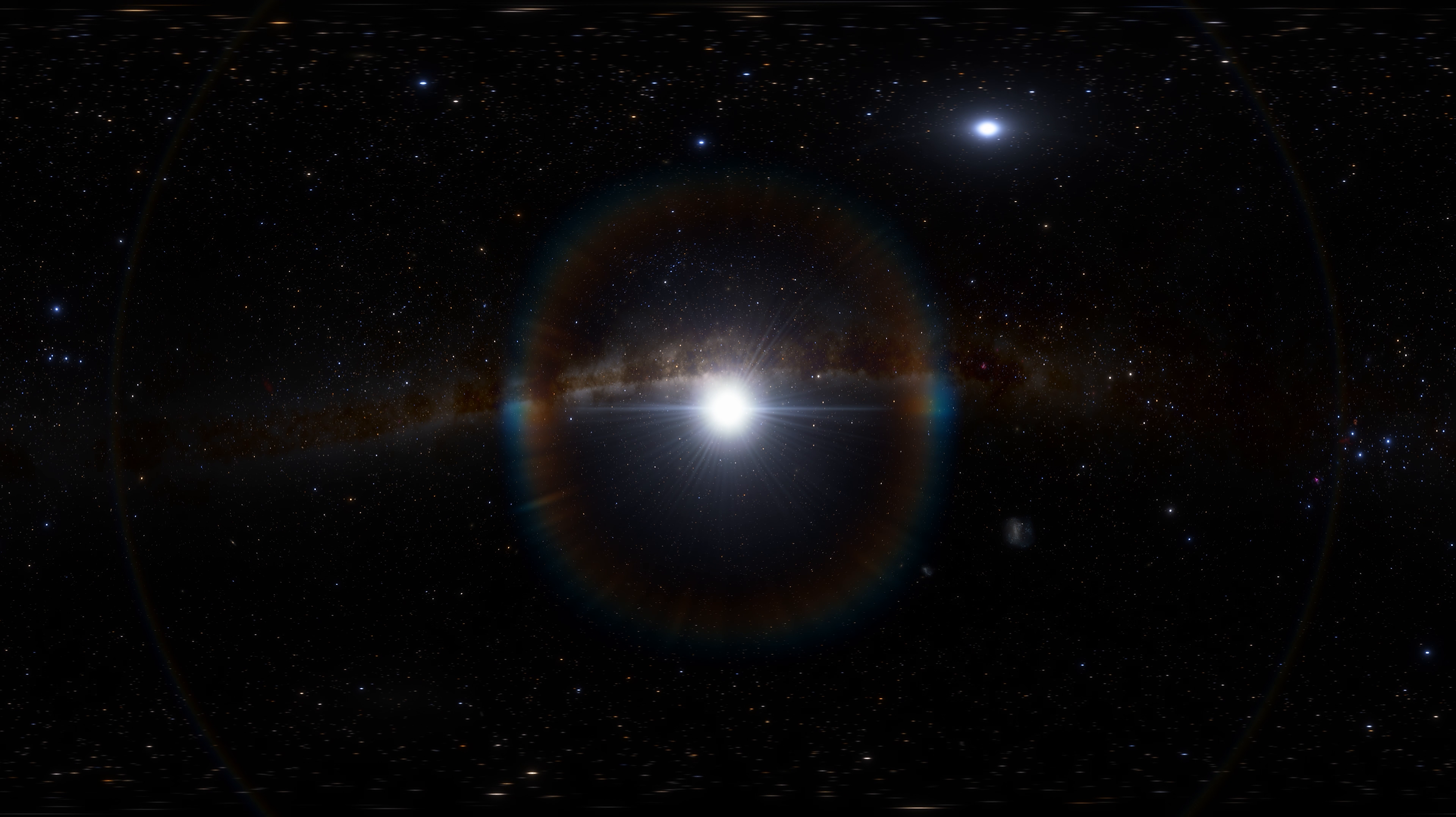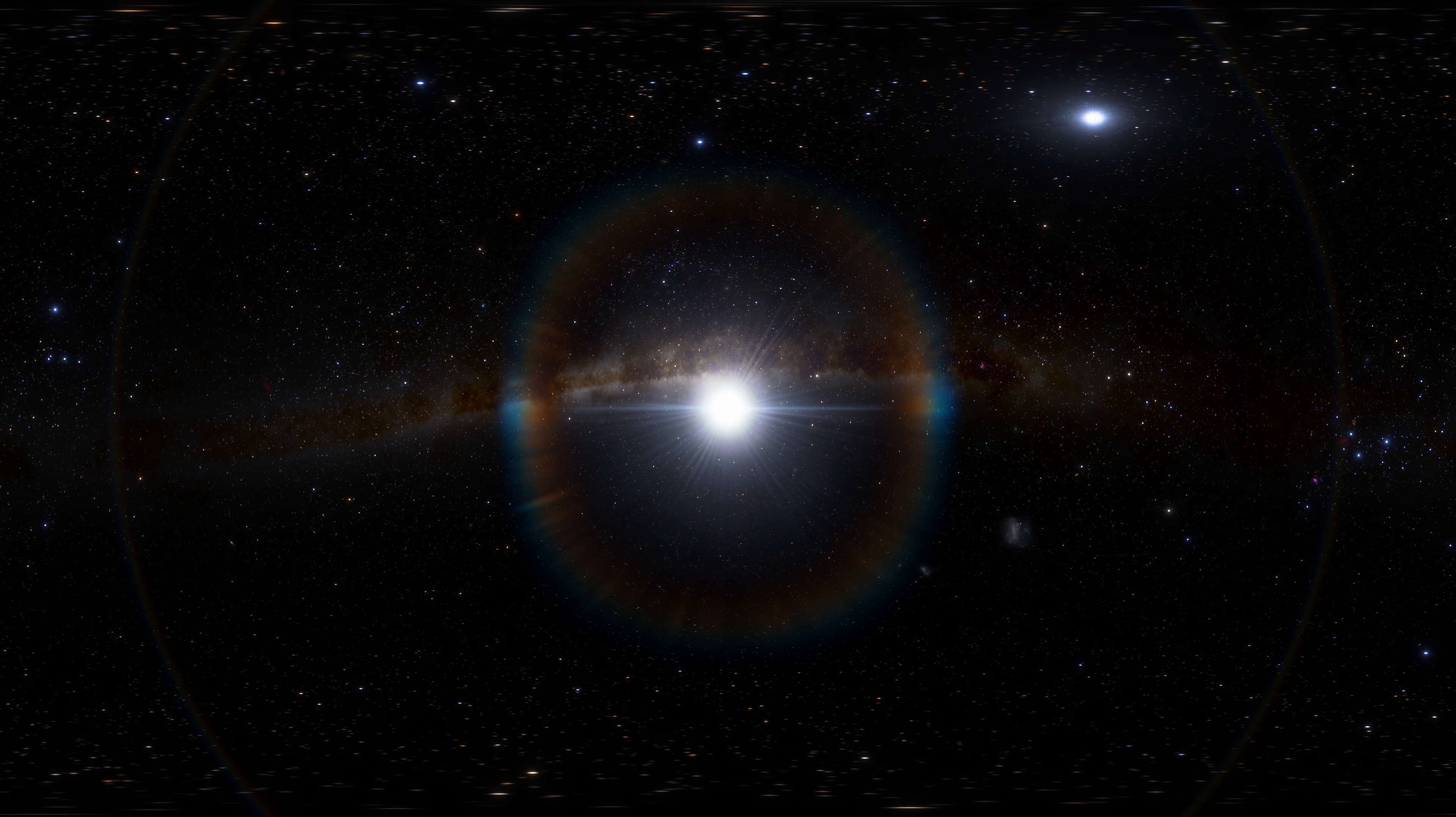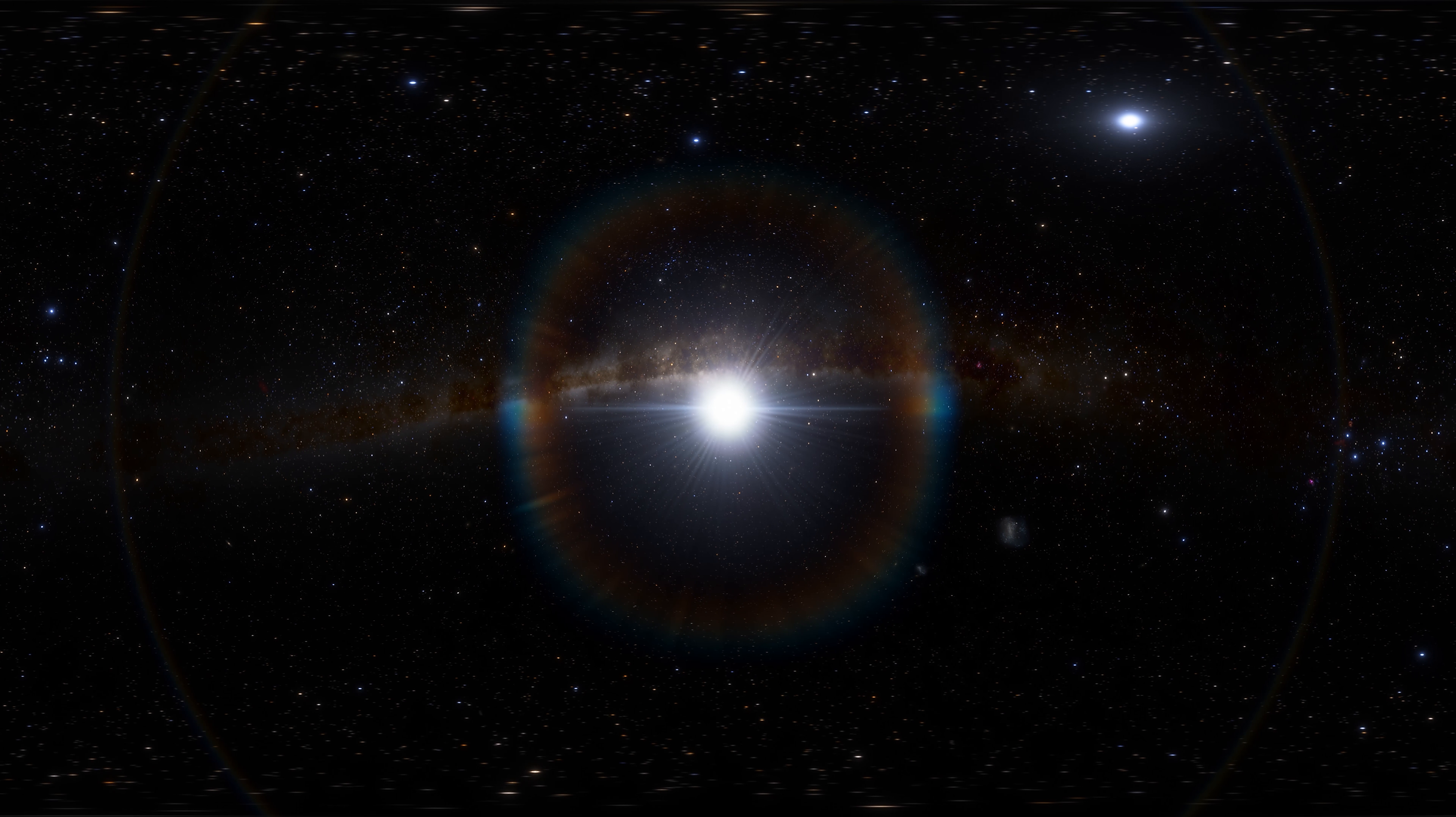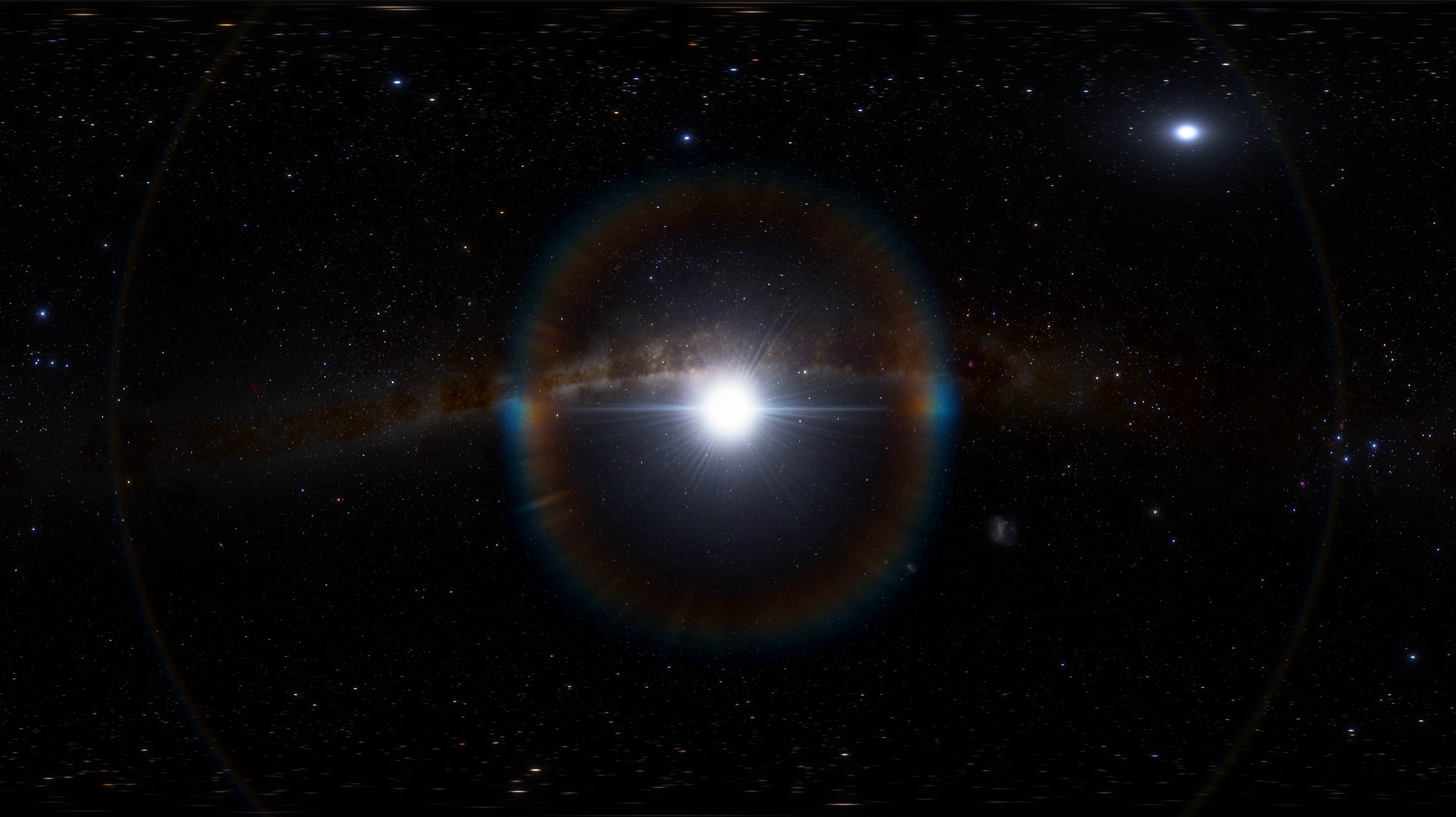Rigel is a blue supergiant. It's the seventh brightest star in the night sky and the first brightest star in the Orion constellation. It is a triple star system containing Rigel A and Rigel B.